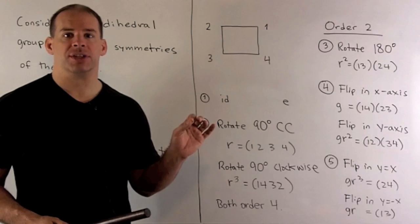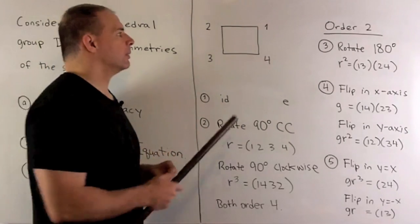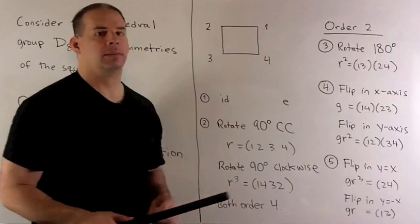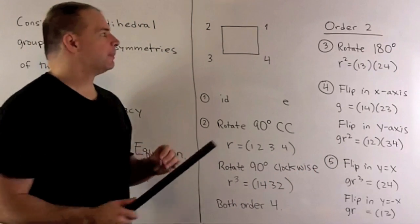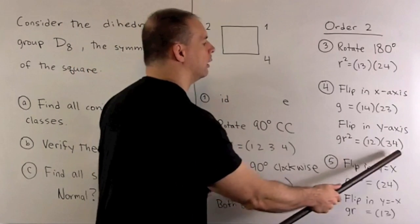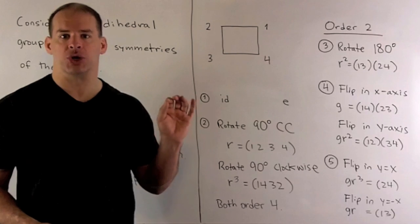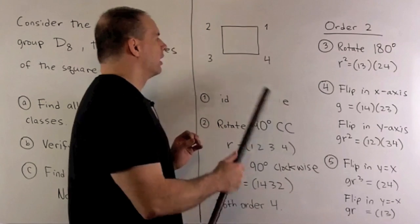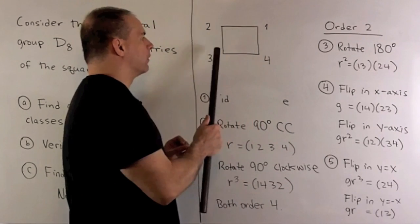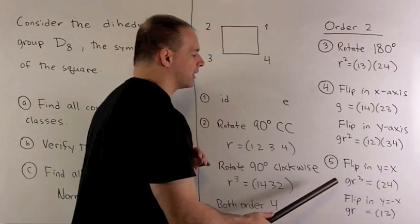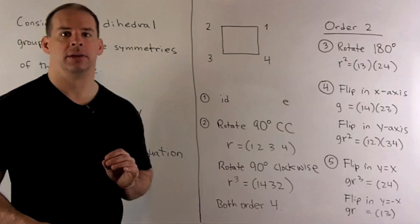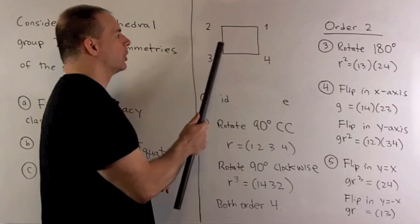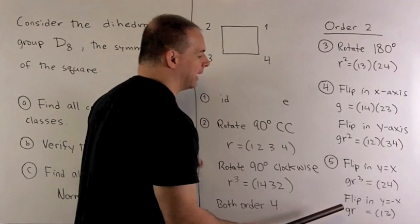What's left are going to be reflections. If I reflect in the x-axis, we'll switch one and four, and two and three. I'm going to call that element G. If we flip in the y-axis, we'll switch one and two, and three and four. You can verify in terms of G and R that that's G times R squared. If we flip in the diagonals — fixing the line Y equals X, so fixing one and three, we're going to switch two and four — then you can check that that's G times R cubed.